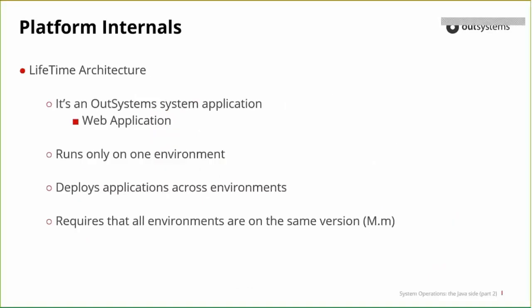Lifetime is an OutSystems web application that runs on the frontends, but only on one of the environments of your infrastructure — or a separate environment just for Lifetime. It deploys applications between environments: you can select an application to move from development to quality, from quality to pre-production, from pre-production to production. It allows you to do the staging part of application deployments. It requires that all environments are on the same major and minor version.